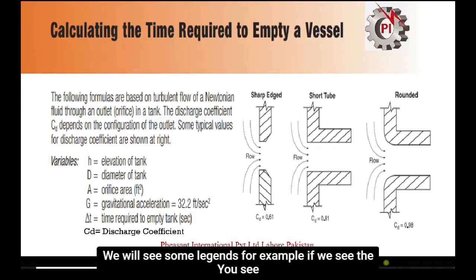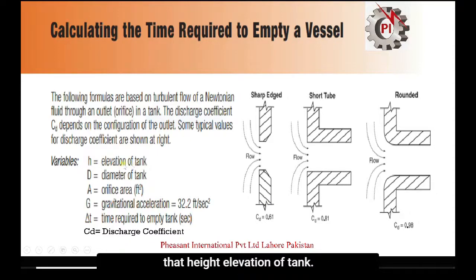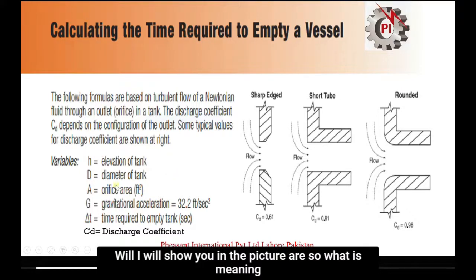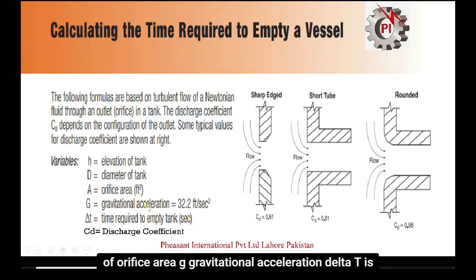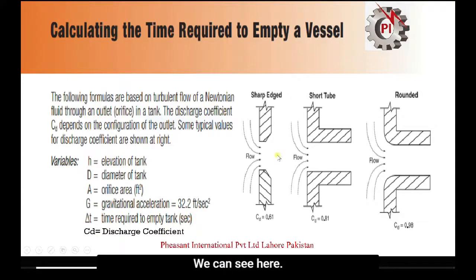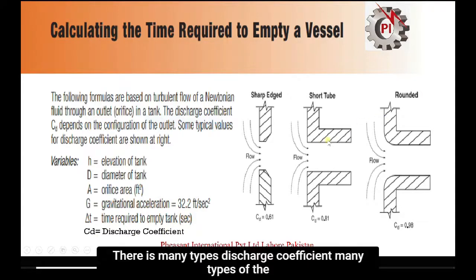Before calculating the required time to empty a vessel, we will see some legends. H is the height or elevation of the tank, D is the diameter of the tank, A is the orifice area, G is gravitational acceleration, and delta T is the time required to empty a tank.